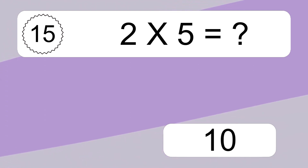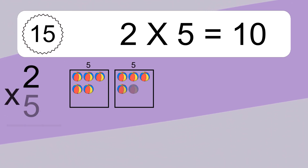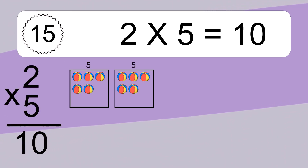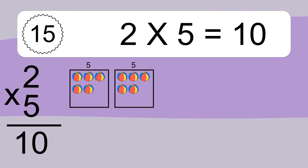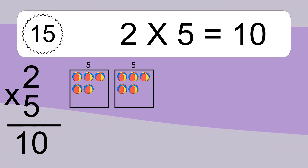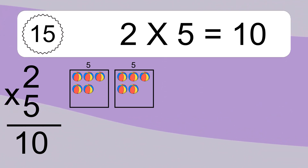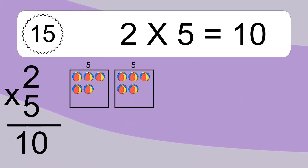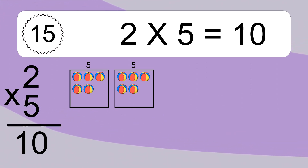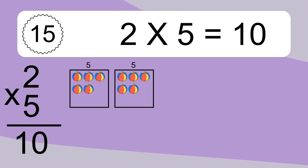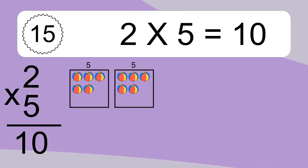2 times 5 equals what? 2 times 5 equals 10. We have 2 boxes, and each box has 5 colorful balls inside. If you count all the balls in all the boxes together, you will have 2 times 5 balls. This equals 10 balls.